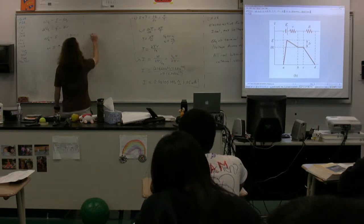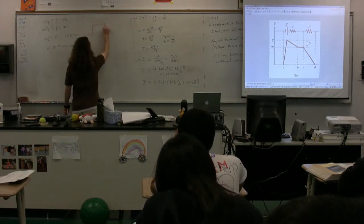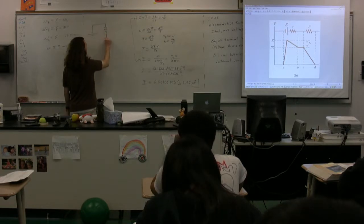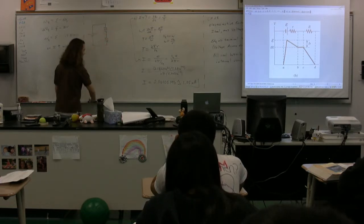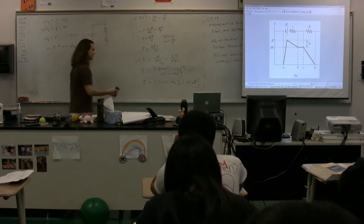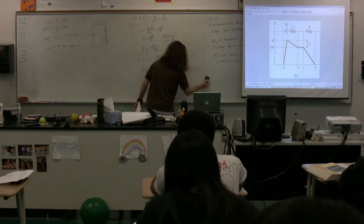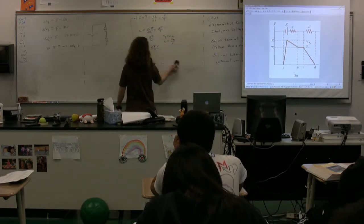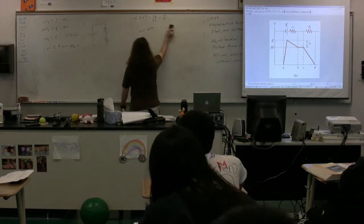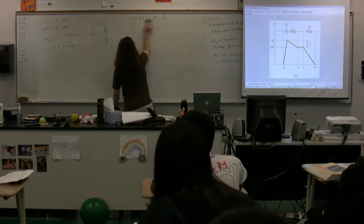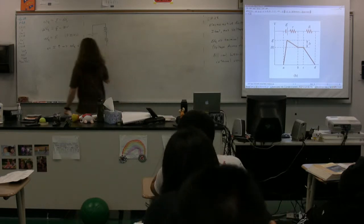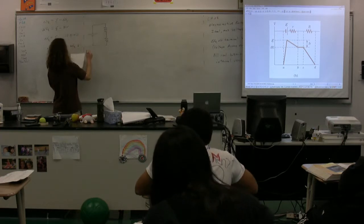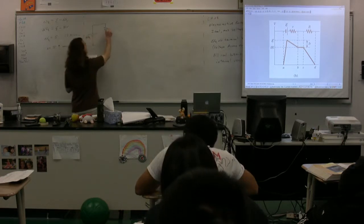Battery. Resistor. Resistor. Class, this is two resistors in series. So we're going to go through and derive the equations for two resistors in series, and therefore multiple resistors in series. We're going to call this, of course, the electric potential difference across the battery, or the terminal voltage.